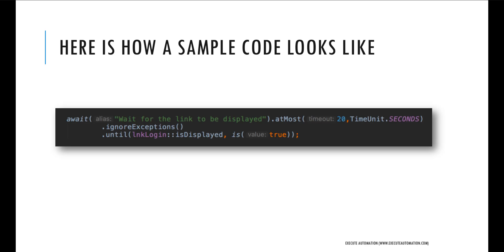You can also use a method called ignoreExceptions, which will ignore the exception if one occurs because the link being waited for doesn't display or has a null value. Then you use the dot until method specifying which element you're waiting for, what property, and what the expected behavior is. Basically, you wait for the login link to be displayed as true, and if it doesn't return true within 20 seconds, it will throw a message saying 'wait for the link to be displayed' has timed out. This is the DSL way of doing it.